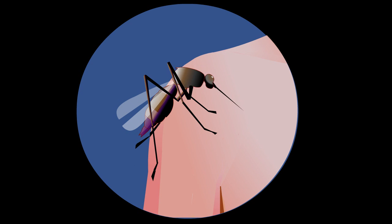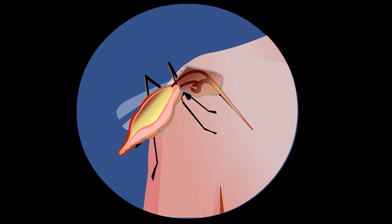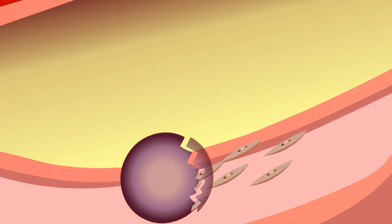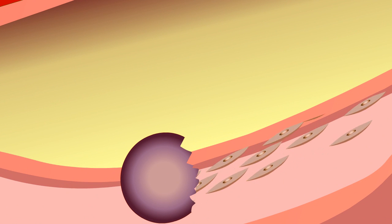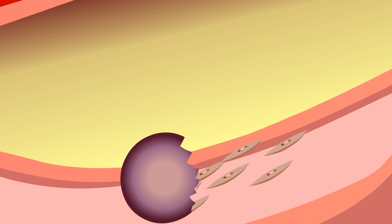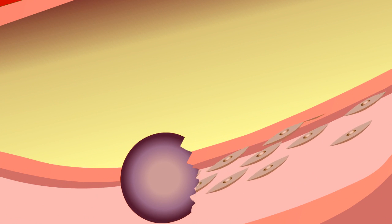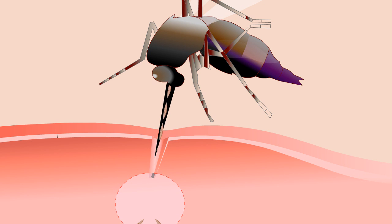The high fever is induced by the toxic haemozoin granules which are liberated in plasma when the parasite schizonts burst out from the RBCs, i.e., the red blood corpuscles. The patient also suffers from severe anemia due to destruction of erythrocytes.